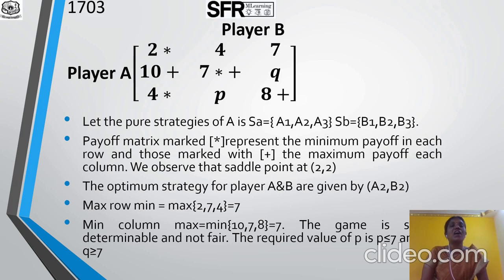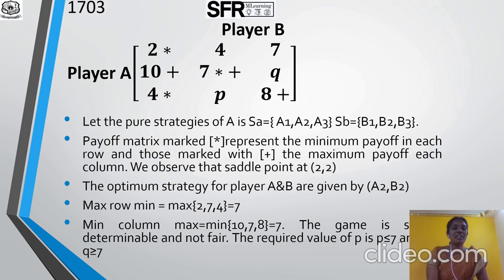How do we find the bound? The optimum strategy for Players A and B is A2, B2. Maximum of Row Minimum = Maximum of {2, 7, 4} = 7 (where row minimums are: row 1 → 2, row 2 → 7, row 3 → 4). The column maximum: column 1 → 10, column 2 → 7, column 3 → 8. So Maximum of Row Minimum = Minimum of Column Maximum = 7. Given the game is strictly determinable, the required bounds are: P ≤ 7 and Q ≥ 7.